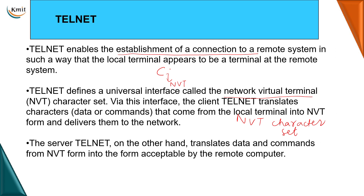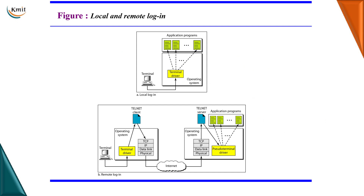The client will have its own representation of characters, so it makes use of the interface called NVT, which will transform the sequence of characters at the client side into the NVT form. This is then given to the server, where the server will take the NVT character set and convert it into its own form. This is done by the Telnet client program at the client side and the Telnet server program at the server side.